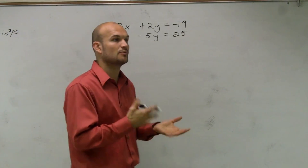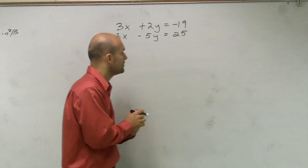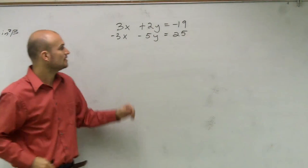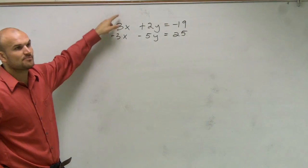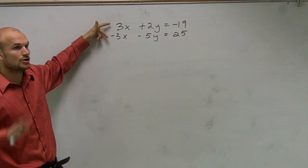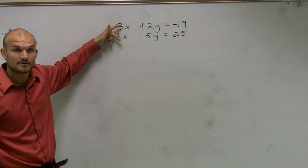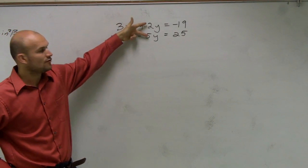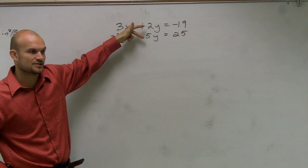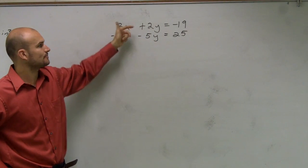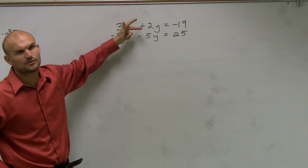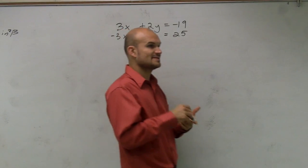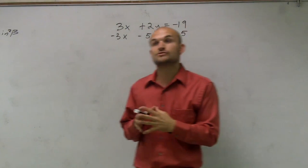For this problem, we want to look at which variable has the exact same coefficient regardless of the sign. I notice both of my x's have a 3. I know their signs are different, but they both have a 3. So they have the same coefficient. For the y's, those do not have the same coefficient — you have 2 and negative 5. Those are not the same. But for x we have the same coefficient, so we can use elimination.